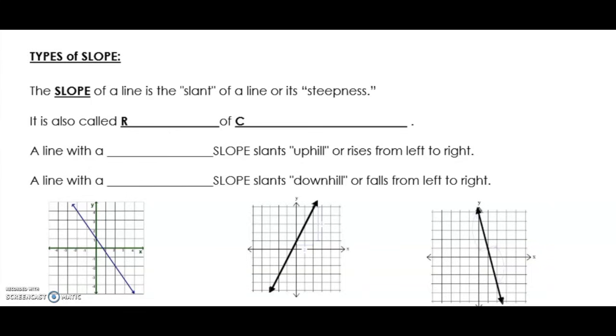The slope of a line is the slant or the steepness of a line given in a linear relationship. It's also called the rate of change. So how quickly is the line moving vertically and horizontally from one point to the next?